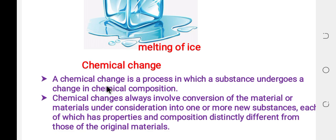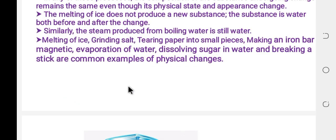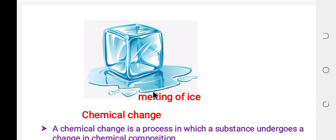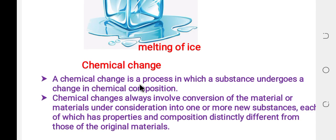Chemical change is a process in which a substance undergoes a change in chemical composition. In contrast, physical change is a process in which a substance changes its physical appearance but not its chemical composition. But in the case of chemical change, the chemical composition itself is altered.